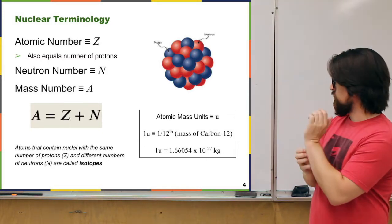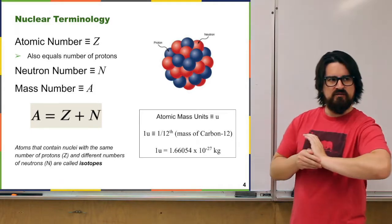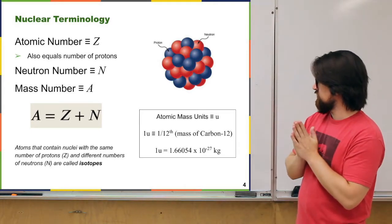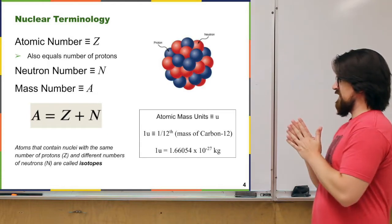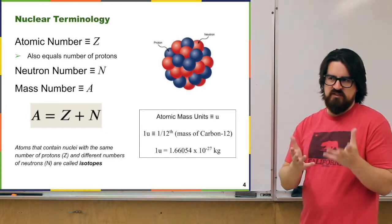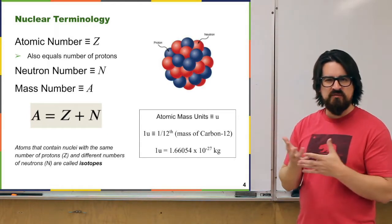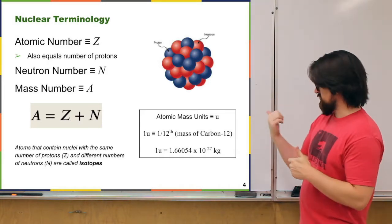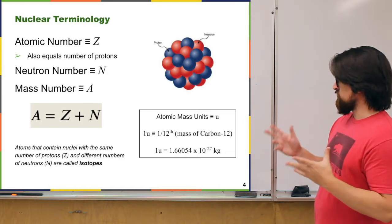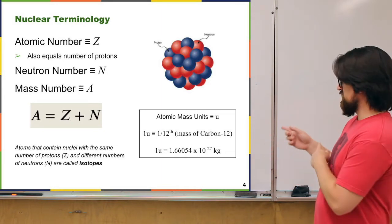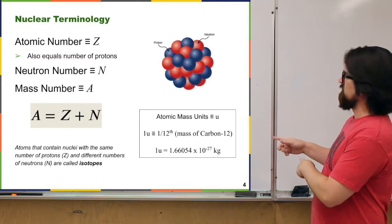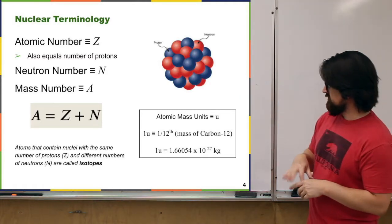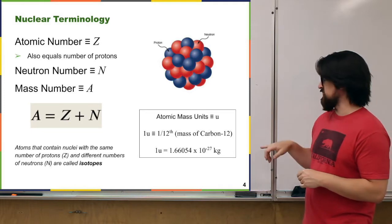When talking about nucleons, it's useful to have a unit that's basically one proton mass or one neutron mass. We call that the atomic mass unit, u. It's defined as one twelfth the mass of carbon-12, which works out to about 1.66 times 10 to the minus 27 kilograms.